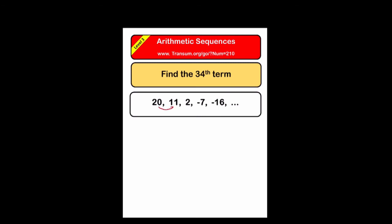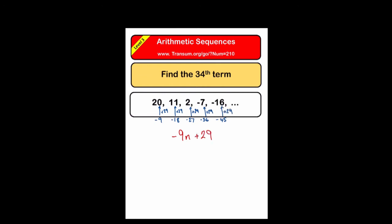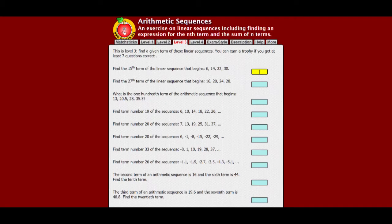The last example at level three begins with twenty and then goes down to eleven and then to two, so we're subtracting nine each time. It's like the minus nine times table, so minus nine n is part of the formula. Writing down the minus nine times table, I have to add on twenty-nine to adjust it. So the complete formula is minus nine n plus twenty-nine. To find the thirty-fourth term, substitute thirty-four in place of n: negative nine times thirty-four plus twenty-nine gives negative two hundred and seventy-seven. Have a go at the online exercise and come back for level four.